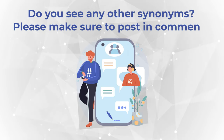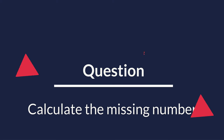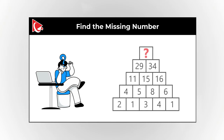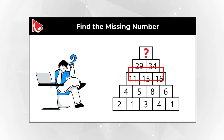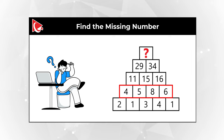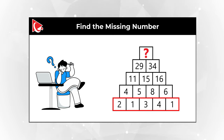Here is a tricky problem that you might find challenging to solve. You're presented with a pyramid. The top of the pyramid starts with the missing number that you need to calculate. The second row contains numbers 29 and 34. The next row contains numbers 11, 15, and 16. The following row has numbers 4, 5, 8, and 6. And the last row has numbers 2, 1, 3, 4, and 1.